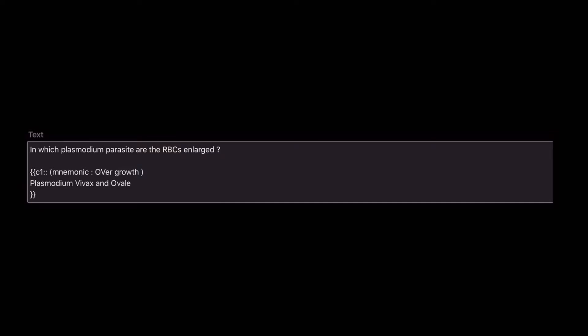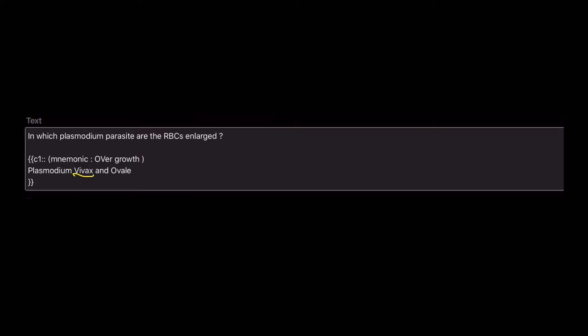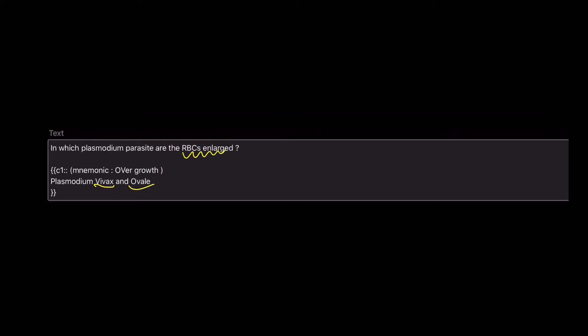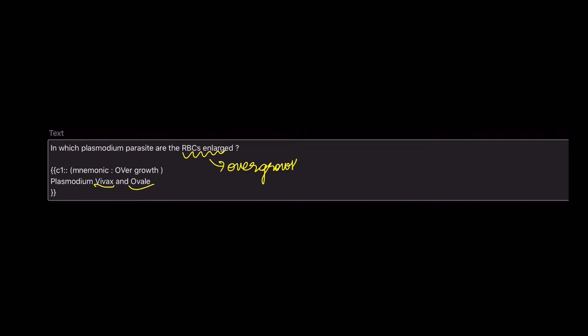We can start with this example. I'm supposed to be studying about which Plasmodium parasites cause RBC enlargement. The answer is Plasmodium vivax and Plasmodium ovale. To remember this, we associate RBCs enlarged with overgrowth — O for ovale, V for vivax. So the mnemonic is 'overgrowth,' and by this you can remember Plasmodium vivax and Plasmodium ovale.